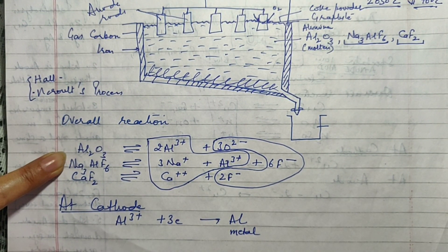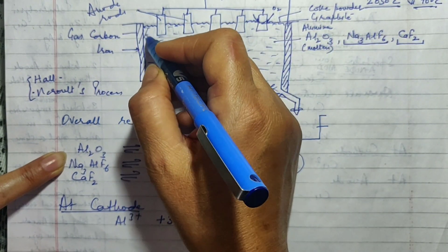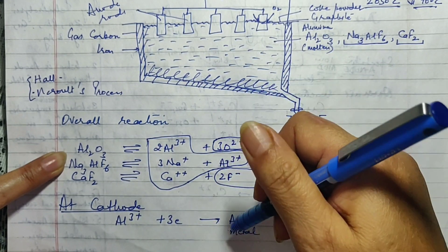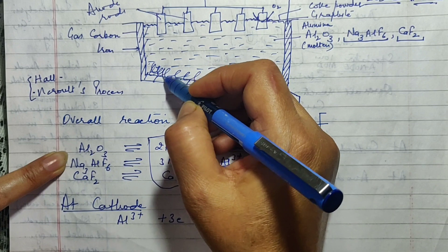This is what is occurring on the cathode. Where is the cathode? This lining is the cathode. So the aluminium keeps on collecting over there. Now this pure aluminium happens to be heavier than the electrolyte. With the result it just settles at the bottom.